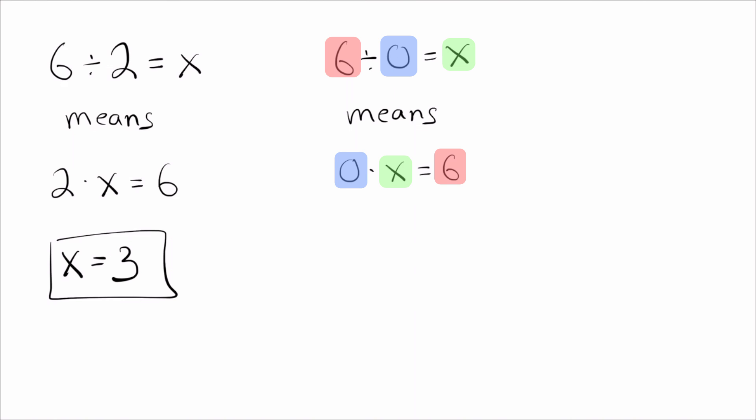And of course, there's no number, right? I can't plug in any number so that 0 times that number will equal 6. So, since there is nothing that will work for x, what we say is that 6 divided by 0 is undefined.